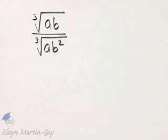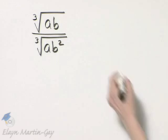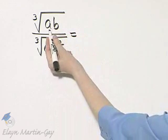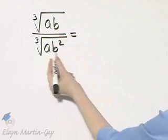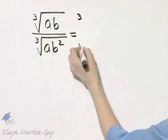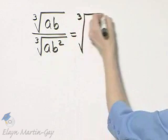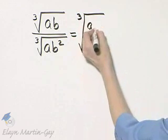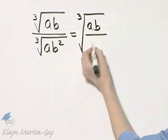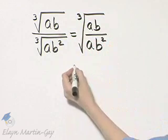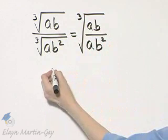We'd like to rationalize the denominator of this expression, but let's first take a moment because I notice we've got factors of A and B here in the numerator and same thing in the denominator. Let's see if we can simplify this at all by writing this as the cube root of AB over AB squared, and we'll work on the radicand a moment.